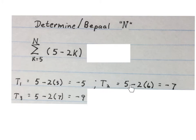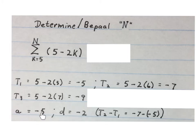So term 1 is this, term 2 is this and term 3 is that. So we know that a is minus 5 and our constant difference is minus 2. You take term 2 minus term 1, that's minus 7, minus minus 5, get minus 2. Then you check it. Minus 9 minus minus 7 is also minus 2, so I know it's an arithmetic series.